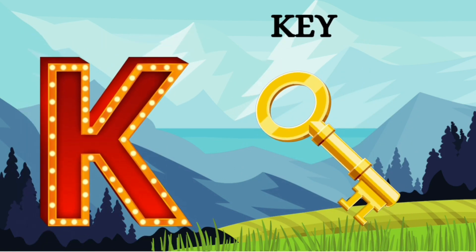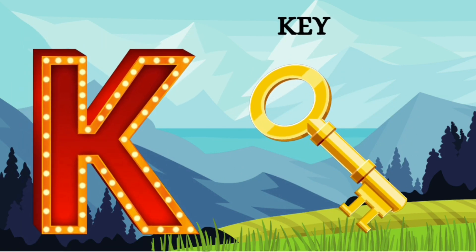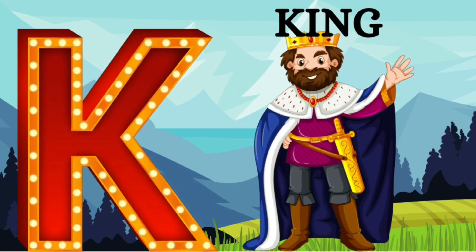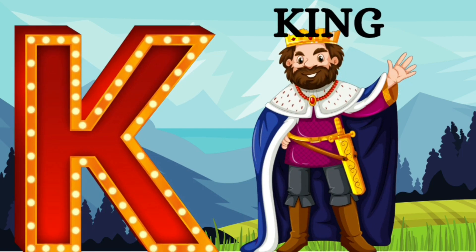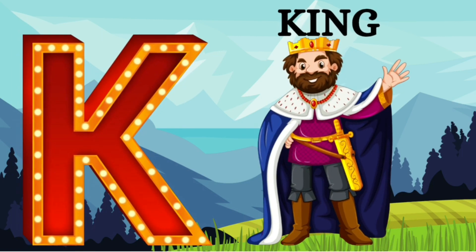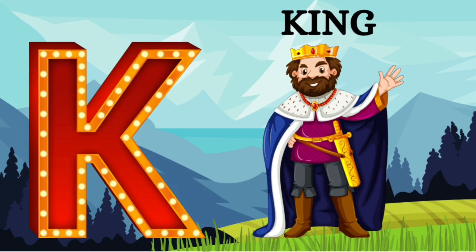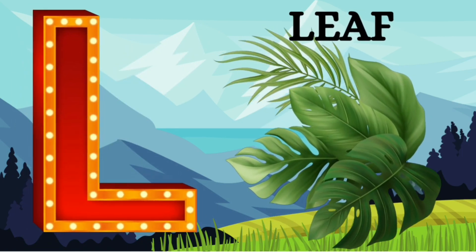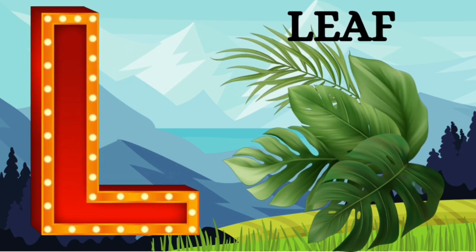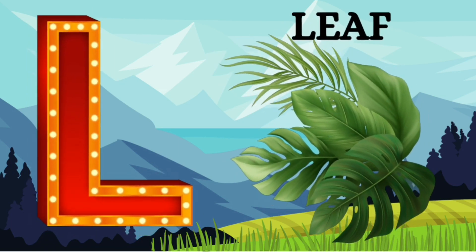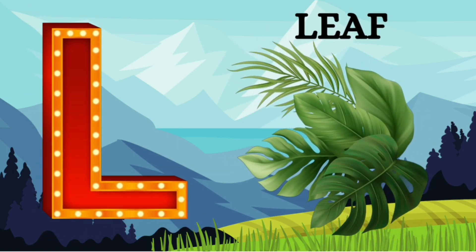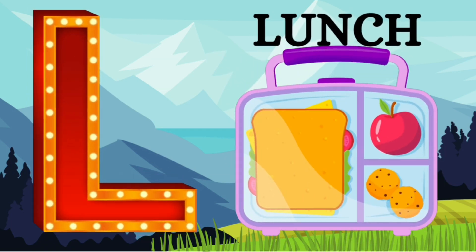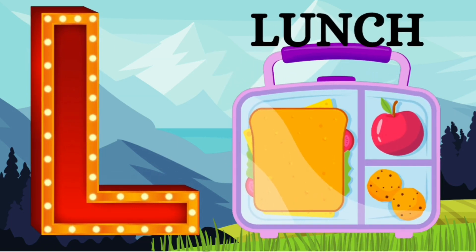K is for Key. K, K, Key. K is for King. K, K, King. L is for Leaf. L, L, Leaf. L is for Lunch. L, L, Lunch.